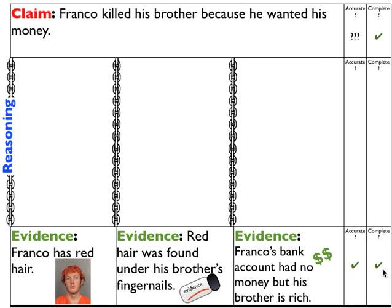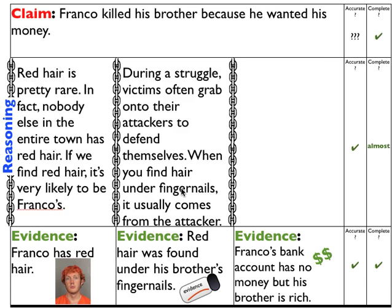Let's start linking things back up. Franco having red hair is nice and true, but how does that tell us he did the murder? We need reasoning — things we know about the way the world works. We know red hair is pretty rare; in fact, nobody else in the entire town has red hair. So if we find red hair, it's very likely Franco's. Likewise, during a struggle, victims often grab onto their attackers to defend themselves, so hair found under fingernails usually comes from the attacker. Let's treat those as accurate and nearly complete.